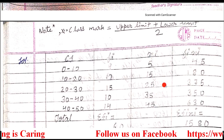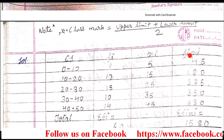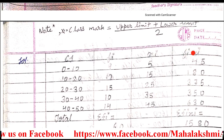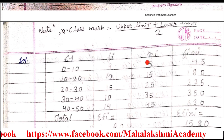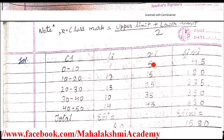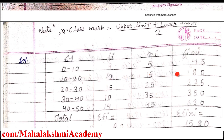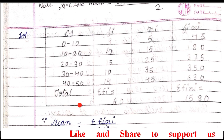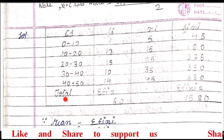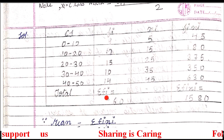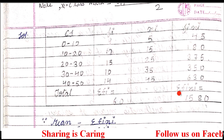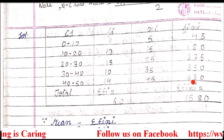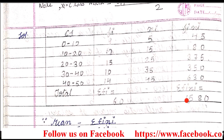After finding the class mark, we will find out the fi·xi column, as we have done in Exercise 17.2. To find out the fi·xi column, you have to multiply the corresponding elements of fi and xi. So 9 times 5 is 45, then 12 into 15. Like this, multiply and enter here. The last row of the table is of total. The total of the fi column, sigma fi, is 60. And when we add all fi·xi data, we will get 1580.